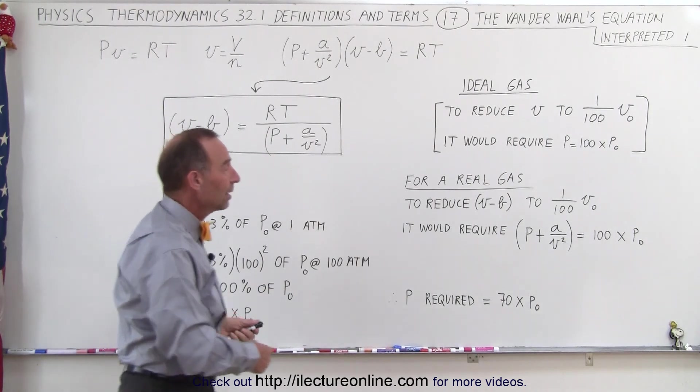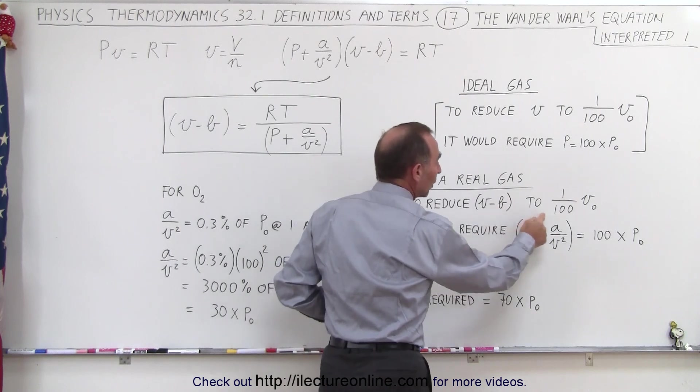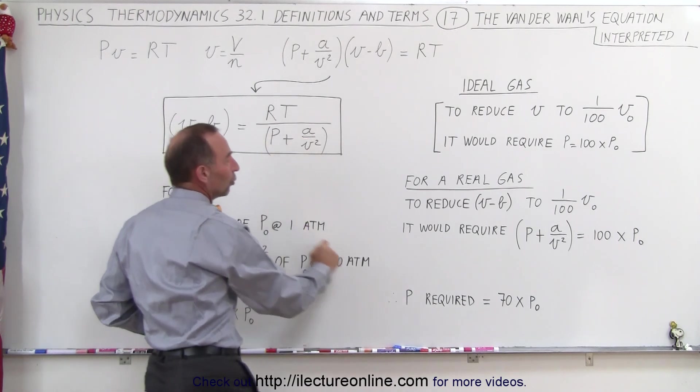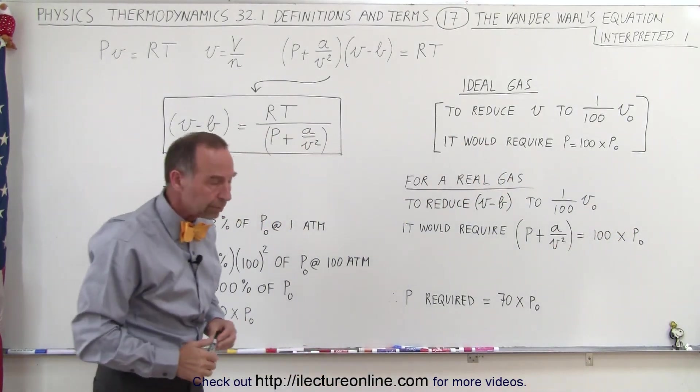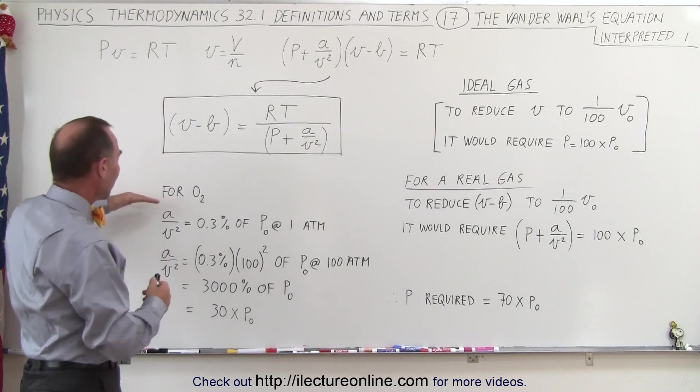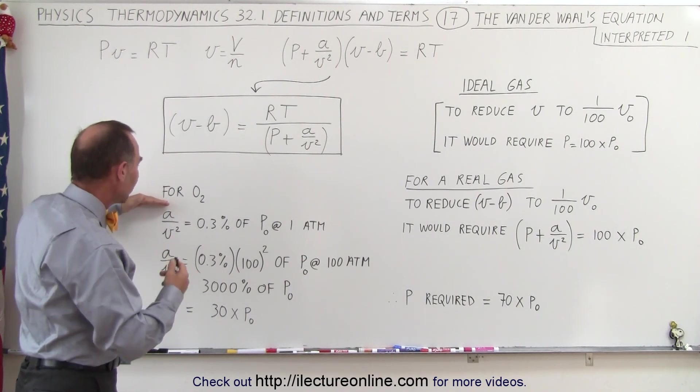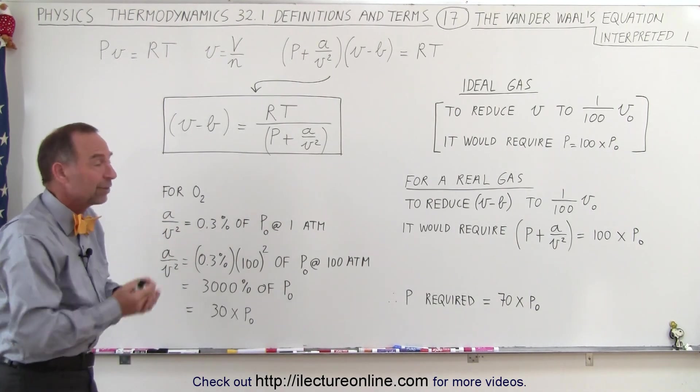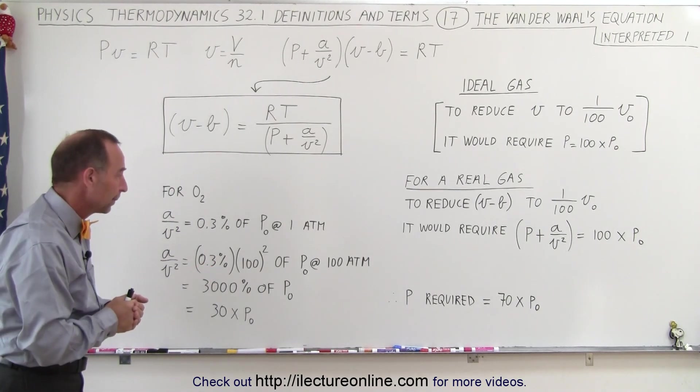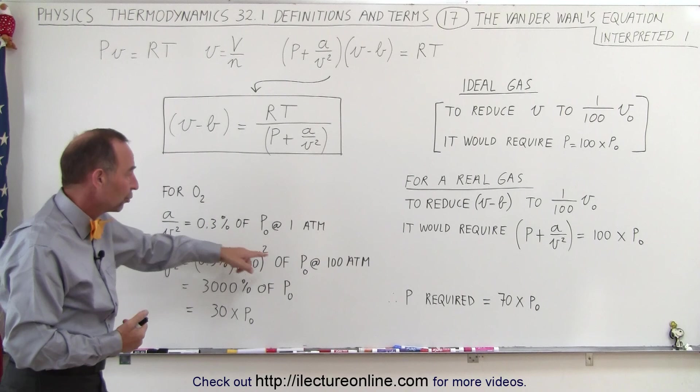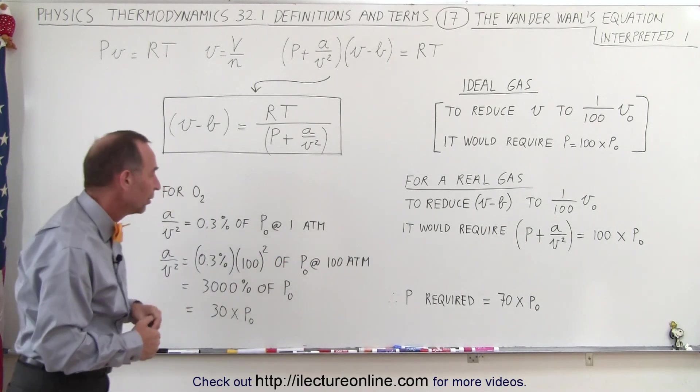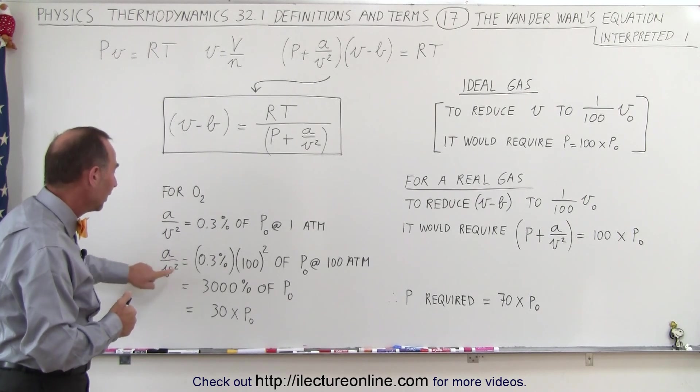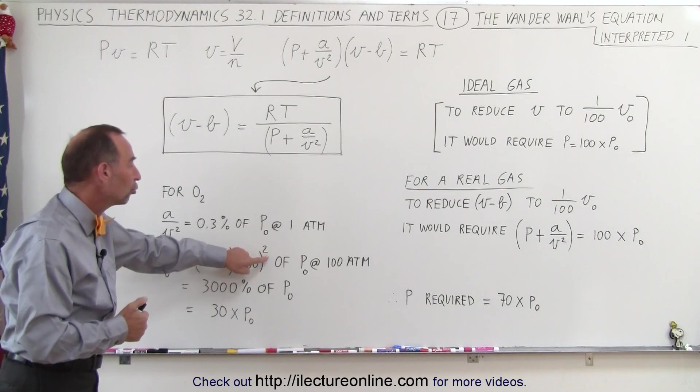So b is no longer significant, and a divided by v squared is also not significant. We can say that to reduce the quantity v minus b to one-hundredth original volume would require this term to increase a hundredfold over the original pressure. If we take, for example, oxygen, we know that at atmospheric pressure, a/v² only accounts for 0.3% of the total pressure in the gas, so we can typically ignore that.